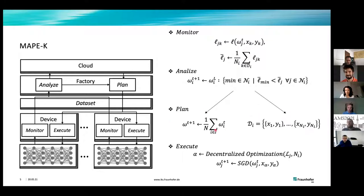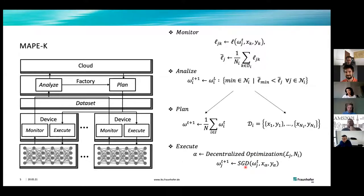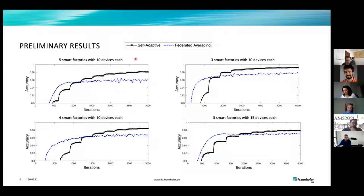The adaptive process decides between global aggregation, which aggregates all models between all factories, or local iteration, which splits the data sets into subsets equal to the number of available devices and runs decentralized optimization to solve the multi-assignment problem. Preliminary results show the self-adaptive model changes behaviour according to local iterations and global aggregations that jump up the model, compared to a baseline of federated averaging.